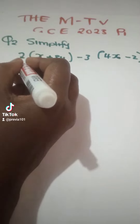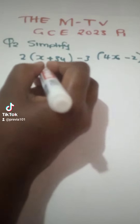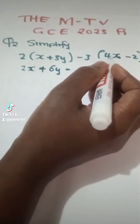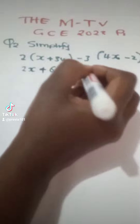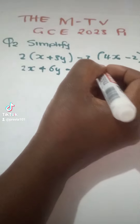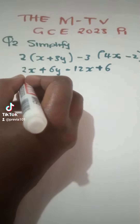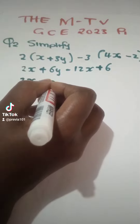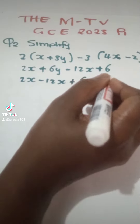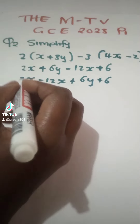2 times 3y is 6y. Negative 3 times 4x is negative 12x. Negative 3 times negative 2 is positive 6. Now group the like terms: 2x minus 12x plus 6y plus 6. Two different signs means we subtract and take the sign of the bigger number.